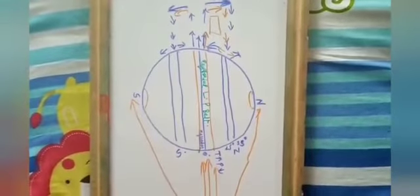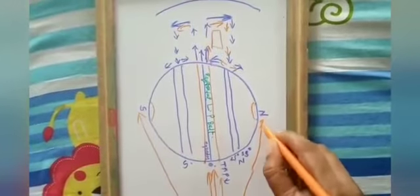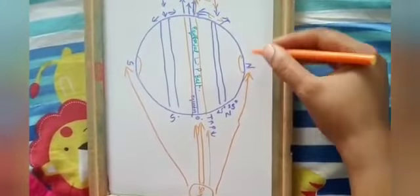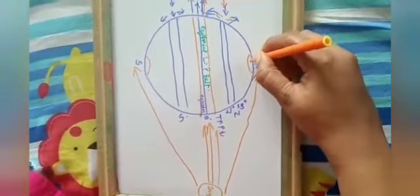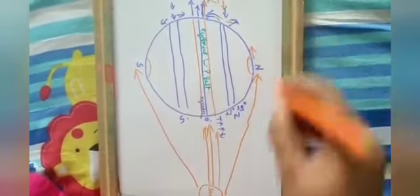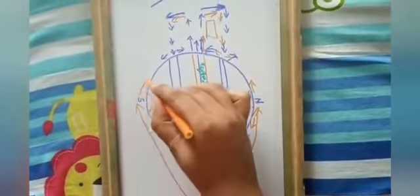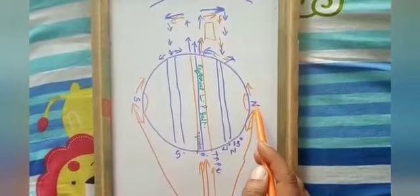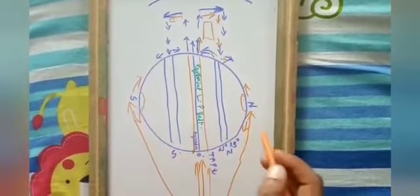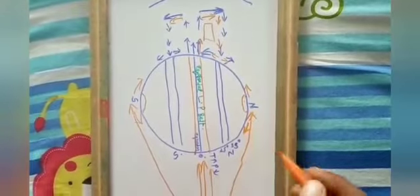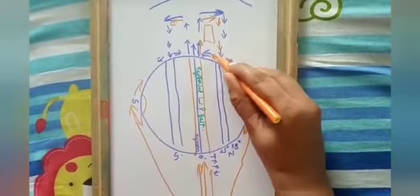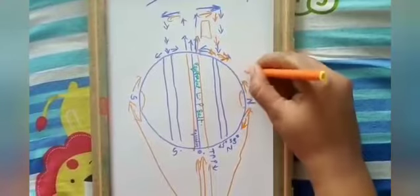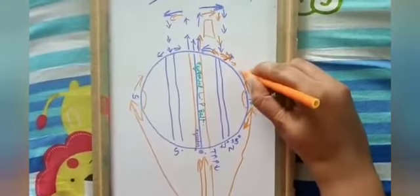The sun rays are very slanting at the north pole and south pole, hence the temperature is very cold. When the temperature is cold, the air is sinking. From the south pole the air is moving towards the north, and from the north side it is moving towards the south pole. So we have sinking air at the poles moving in opposite directions.